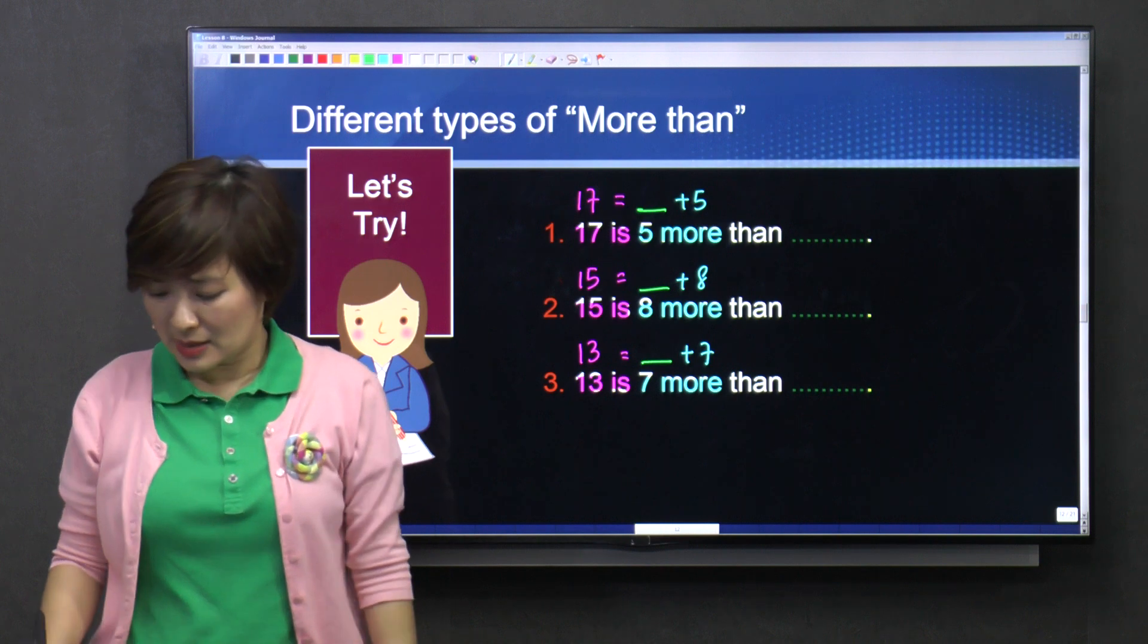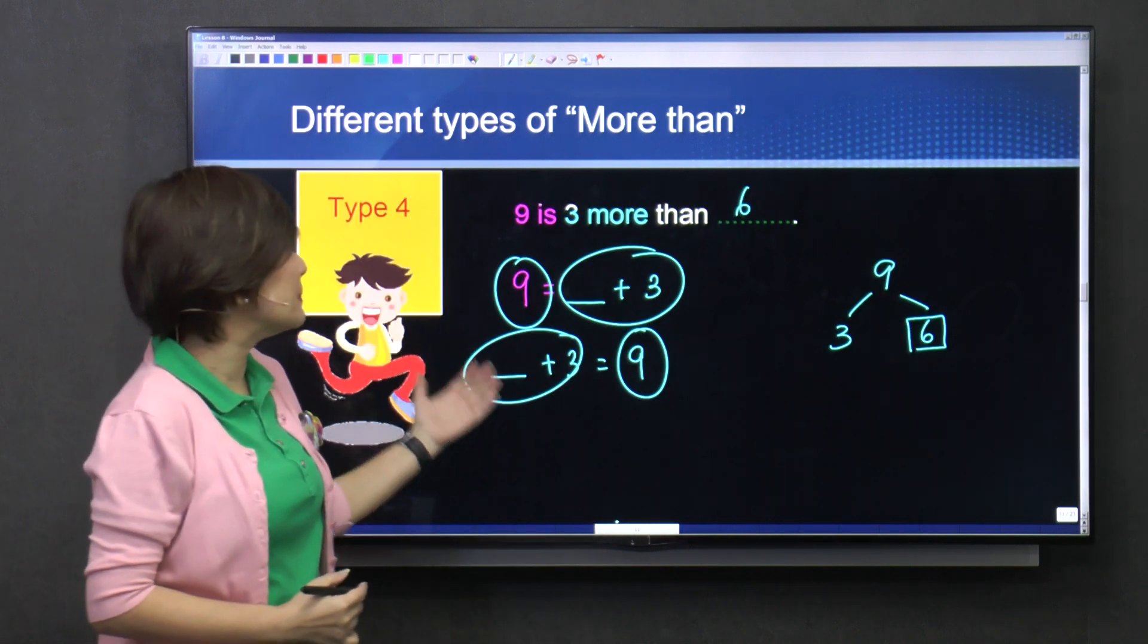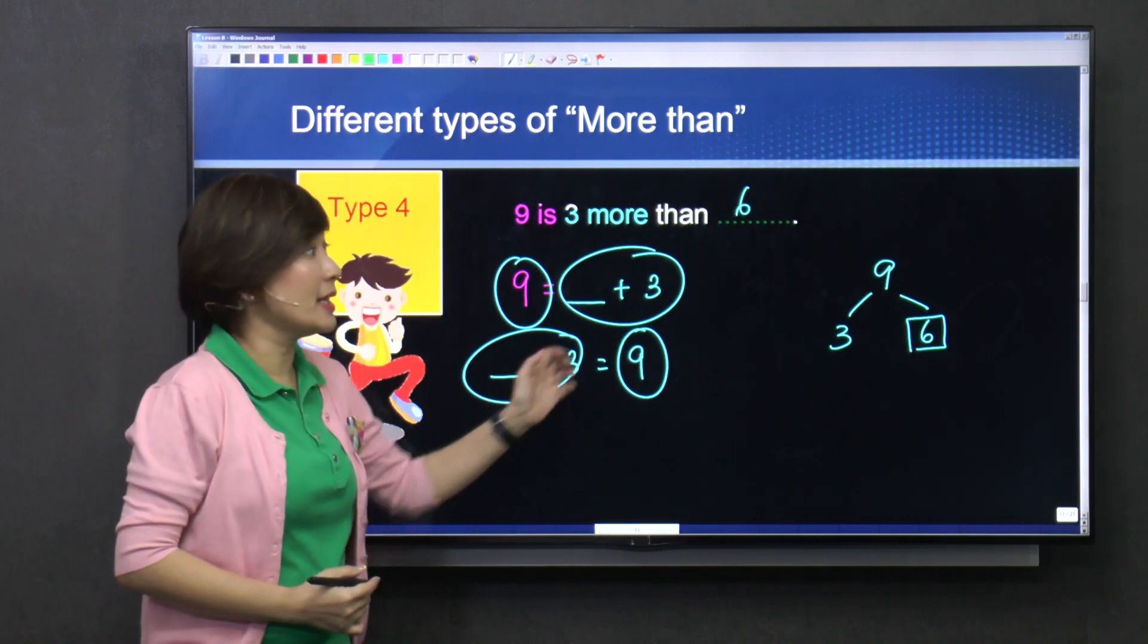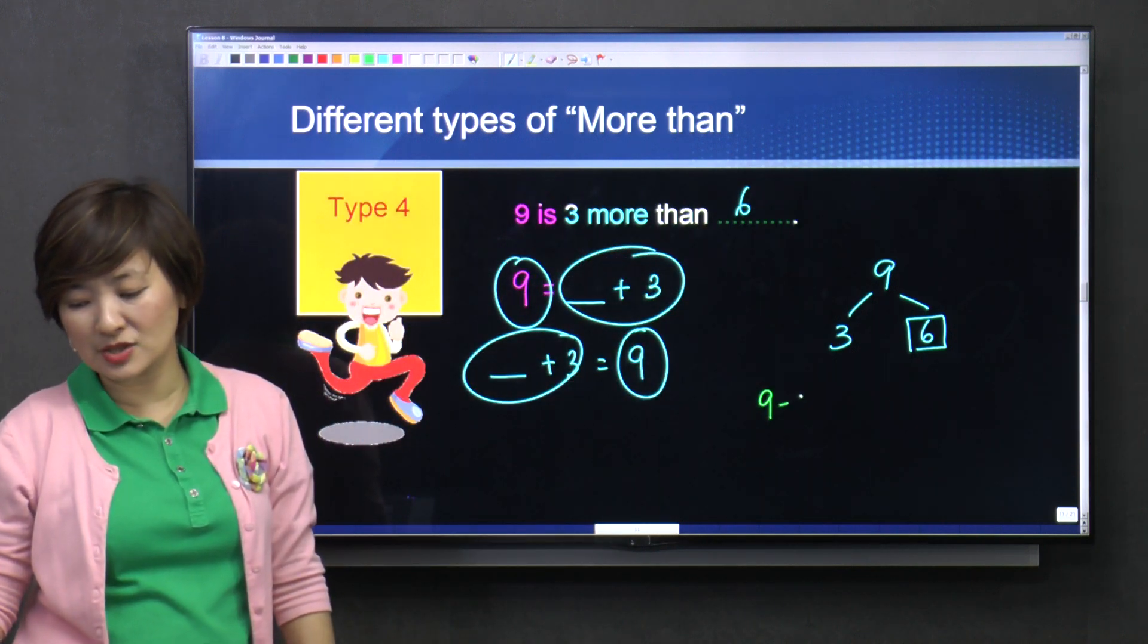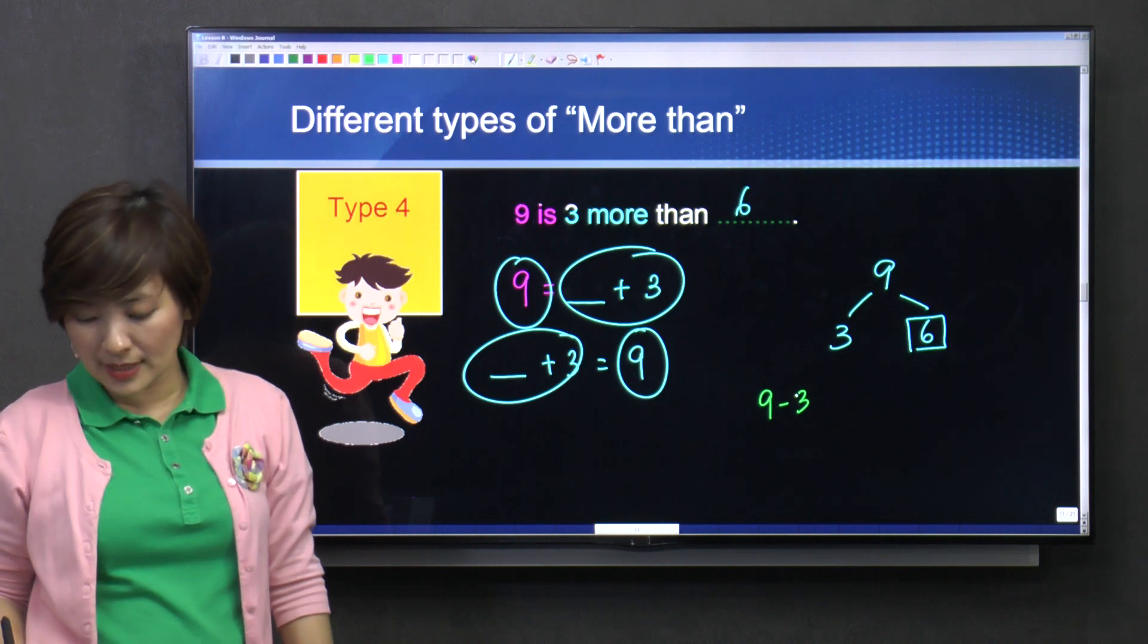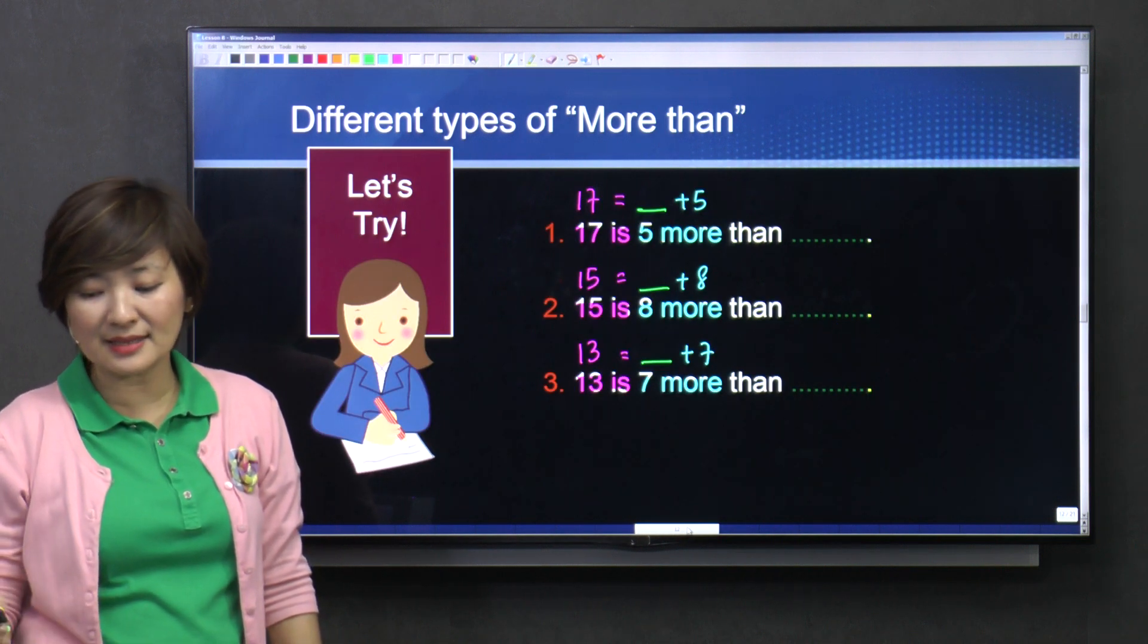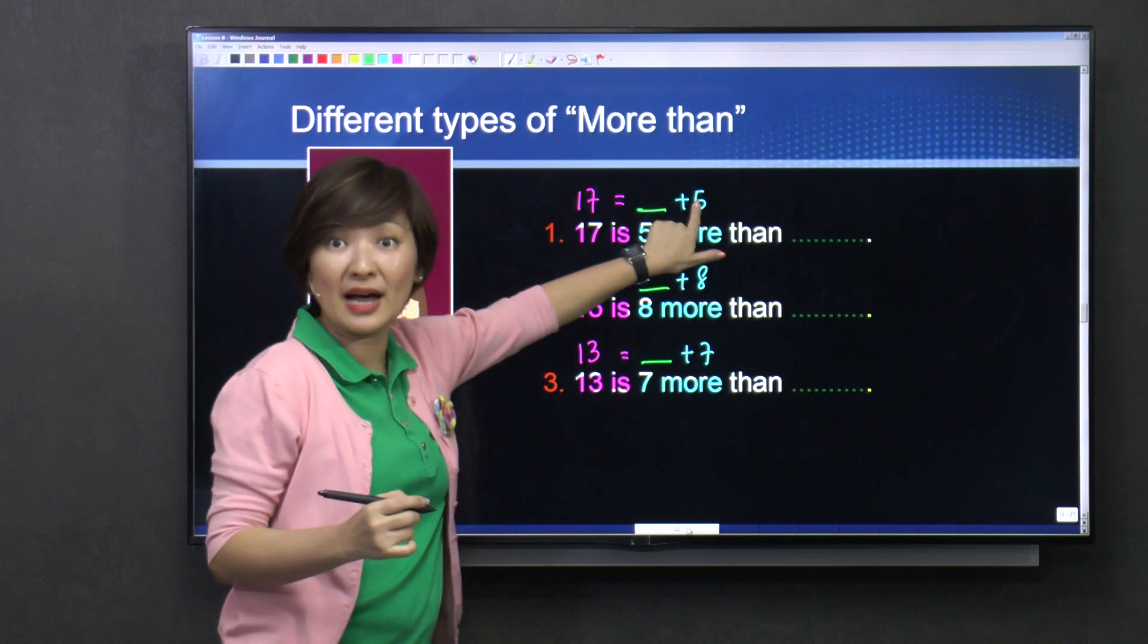Then after that, I'll work at it. The way I work at it would be similar to this. Right? To get this answer six, I said that I took nine minus three. Right? So here, it's the same thing. I can take the big number, seventeen, minus five.